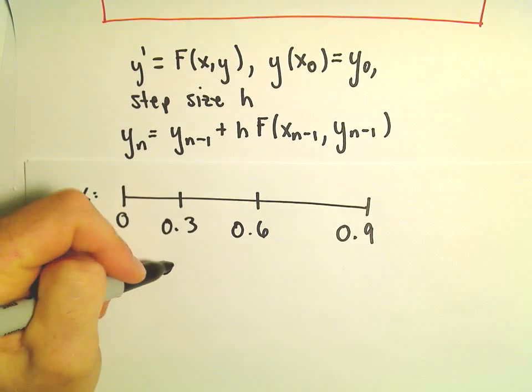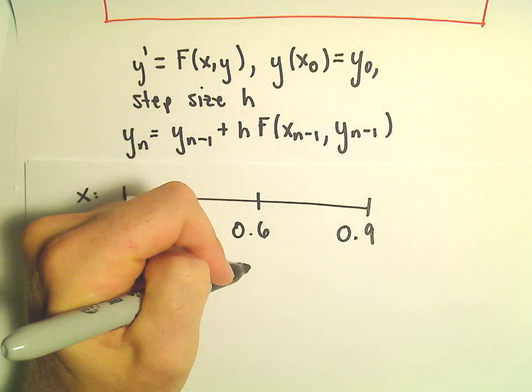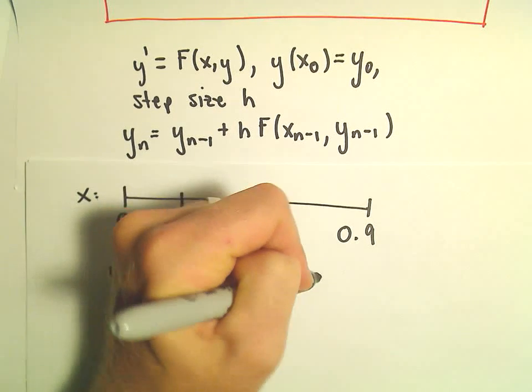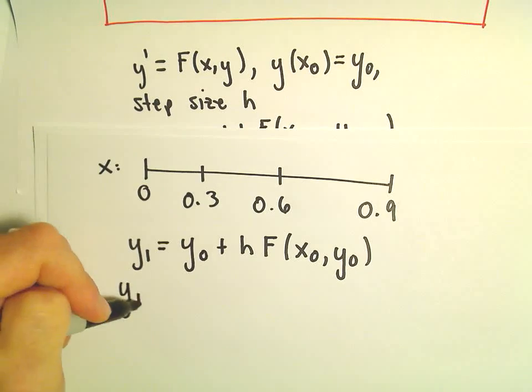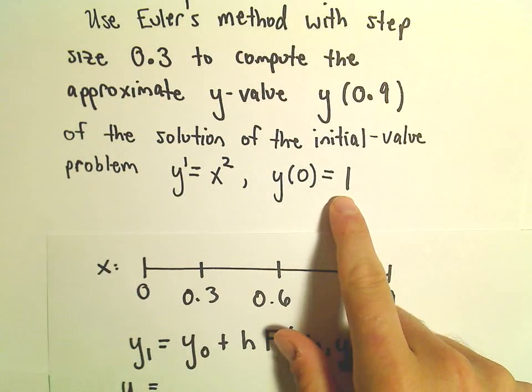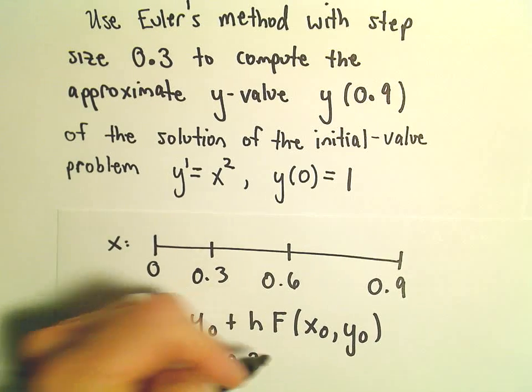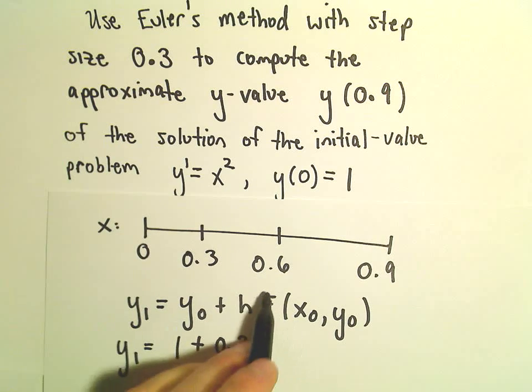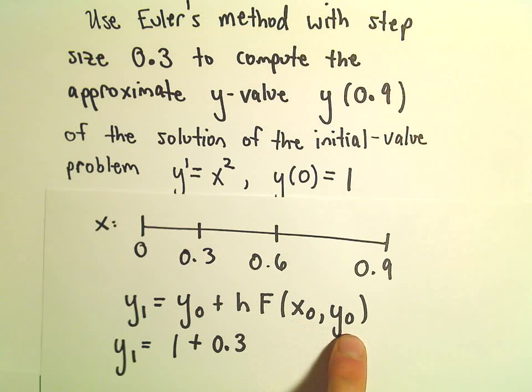And then we'll have to take f of x sub 0 and y sub 0. Okay, so our y naught value, that's the value that we're starting with, and it says our initial y value is going to be y equals 1. And then we take our step size of 0.3, and then our capital F represents the derivative. So it says we have to plug in the value x sub 0 and y sub 0, respectively, for x and y.